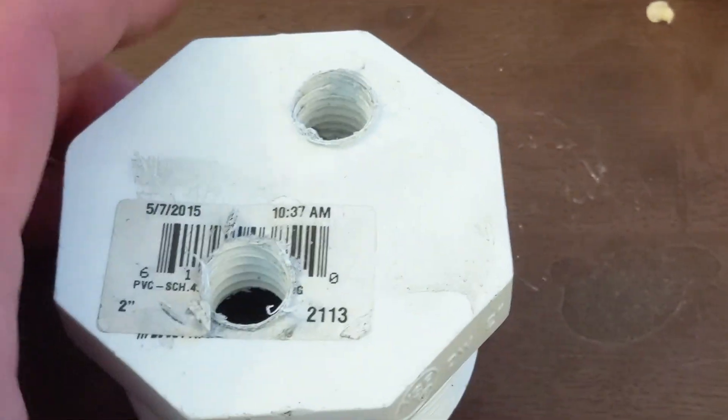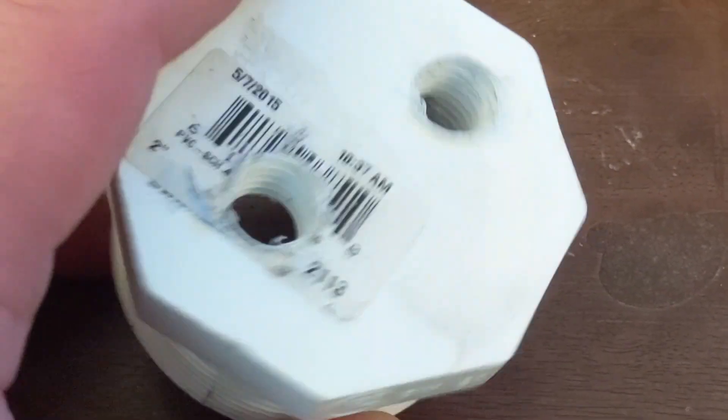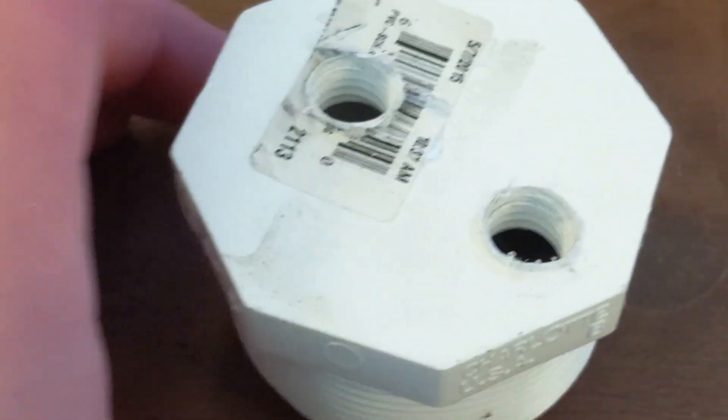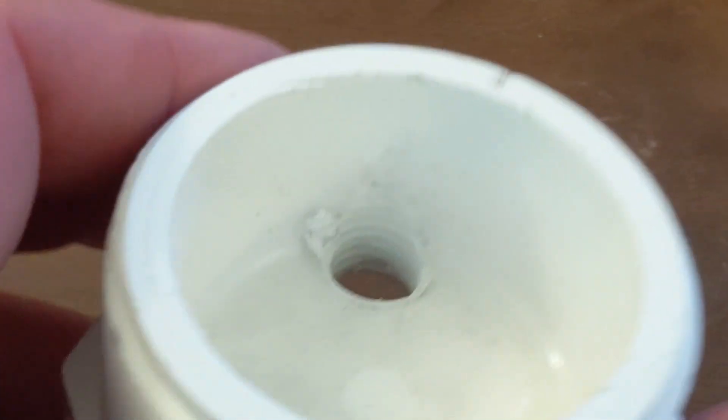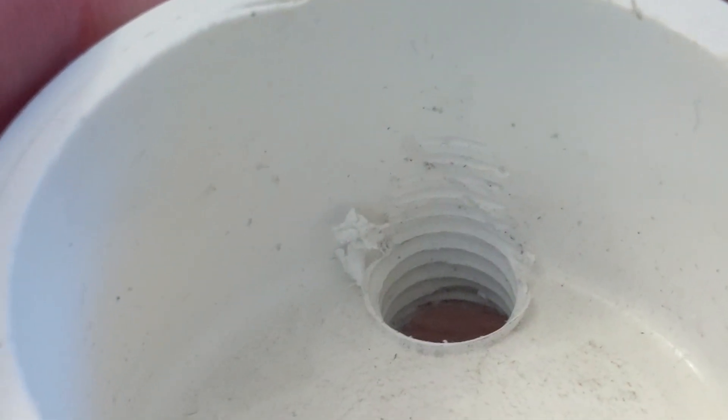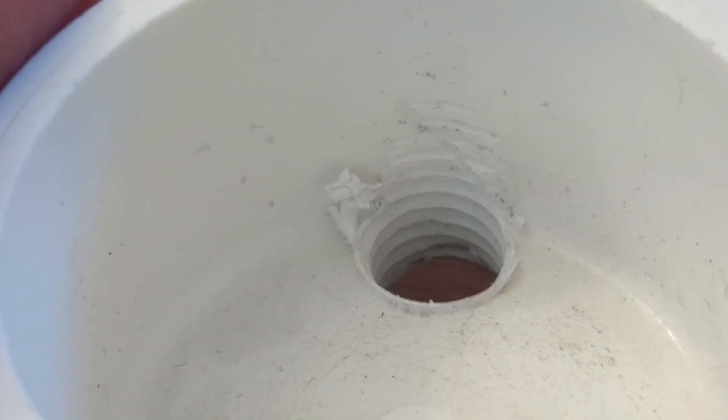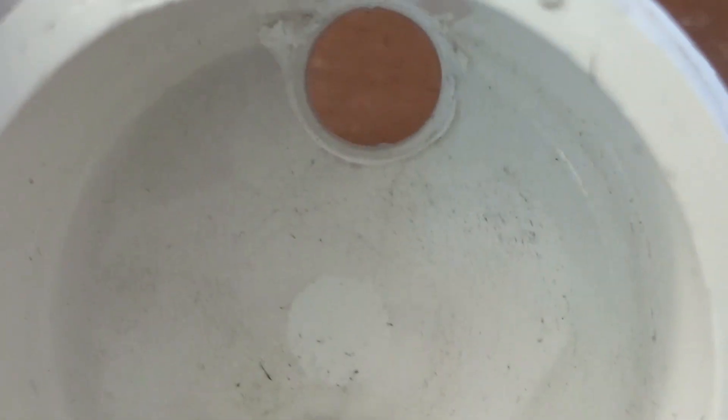I really don't like those Harbor Freight tap and dies. They are so cheap. Anyway, this is what you get. You got your two threaded holes and you got to be careful because like I told you earlier, the wall is pretty close on the inside. The outside is deceiving and I almost was too far out to get that hole correct right there. You're going to end up with two threaded holes.